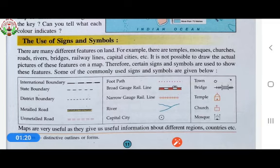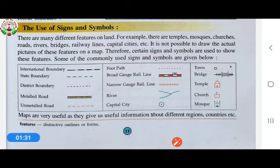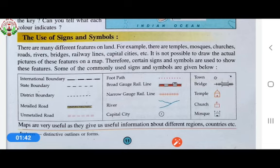Therefore, certain signs and symbols are used to show these features. Some of the commonly used signs and symbols are given below. Students, you can see in this picture some of the signs and symbols are given here. First one is international boundary,